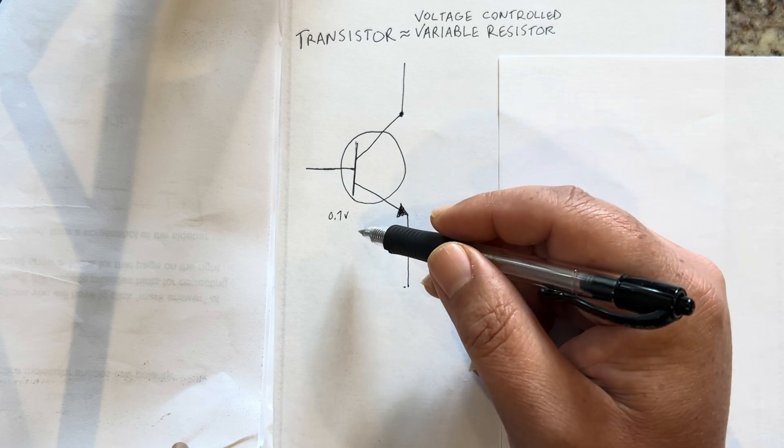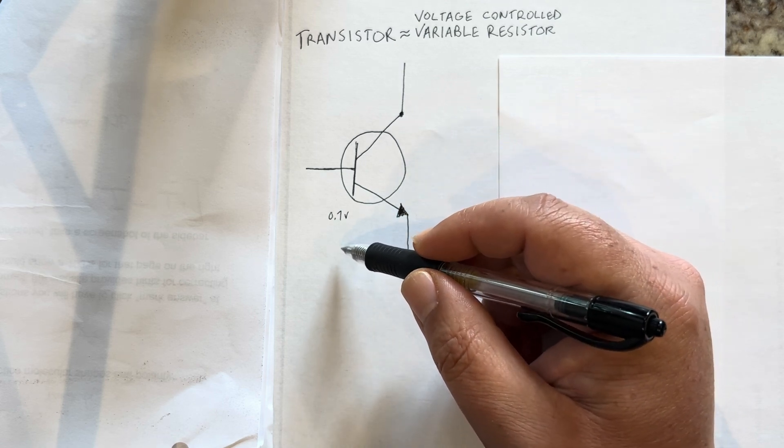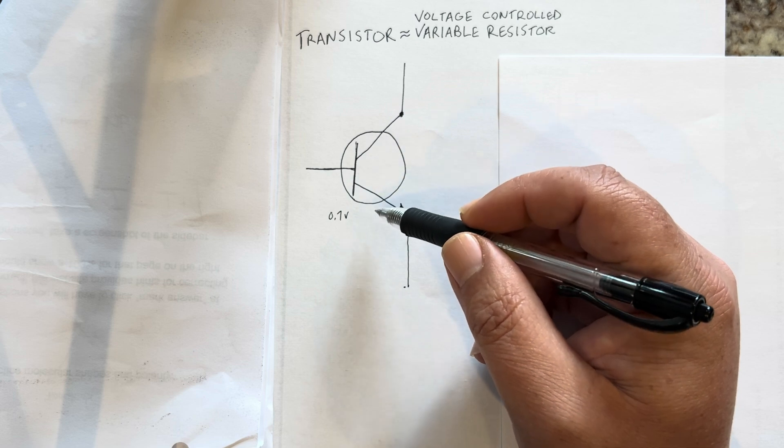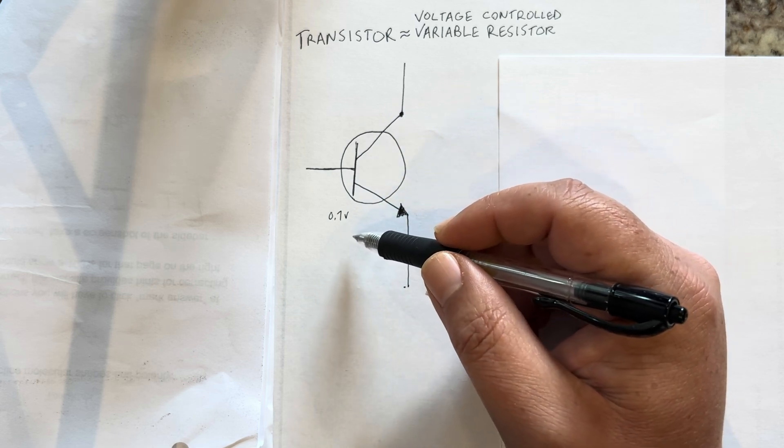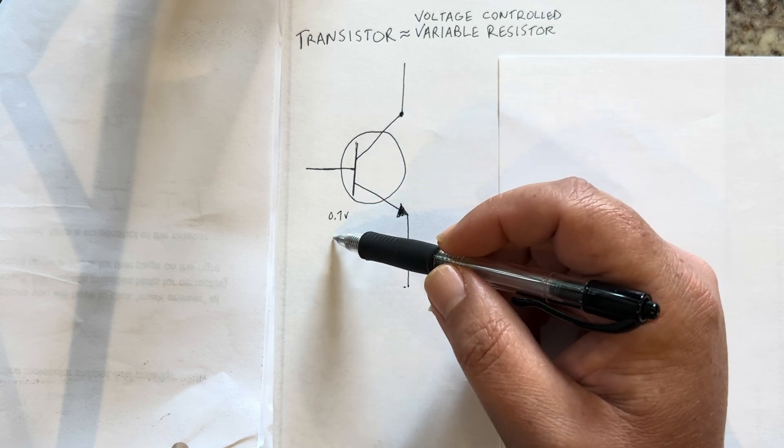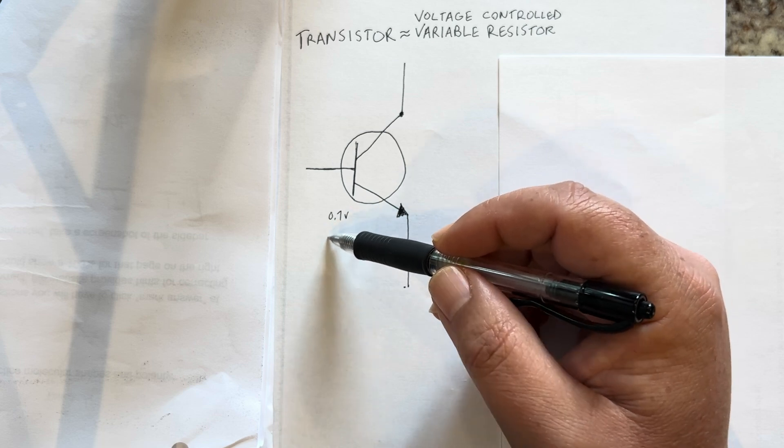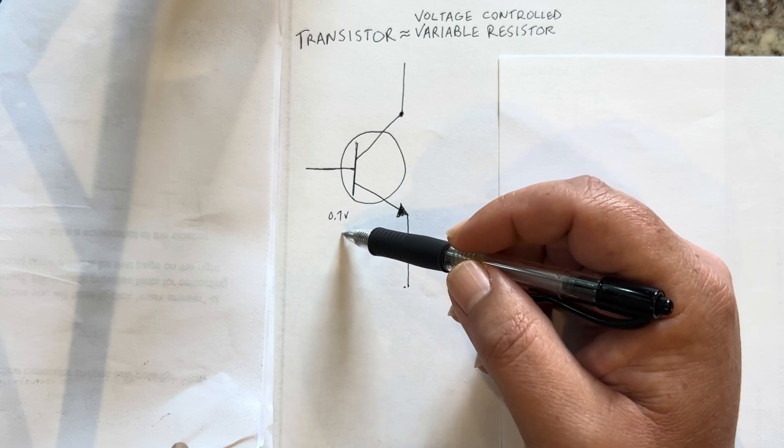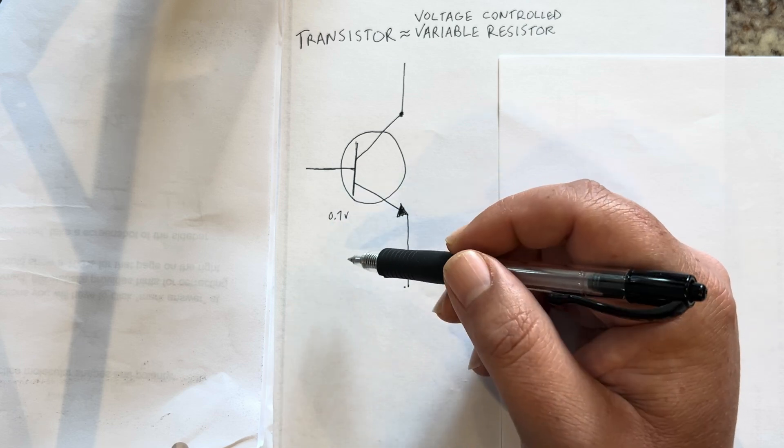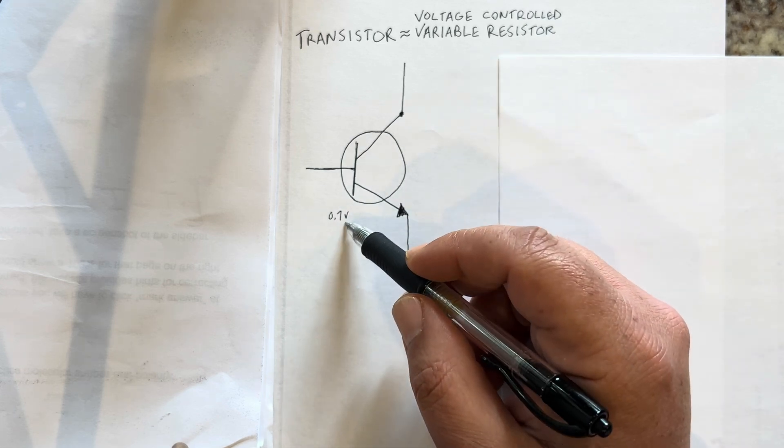The transistor is not really on and not really off, but it's on with an impedance that's controlled by the amount of voltage applied to the base of it.